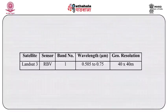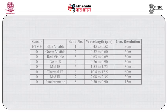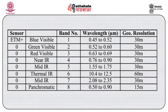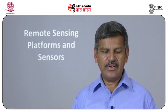Come to Landsat 7 ETM+, which has blue visible, green visible, red visible, near infrared, mid infrared, thermal infrared, mid infrared, and PAN bands. The geo-resolution is 30 meters for most bands, 60 meters for thermal infrared, and 15 meters for PAN.